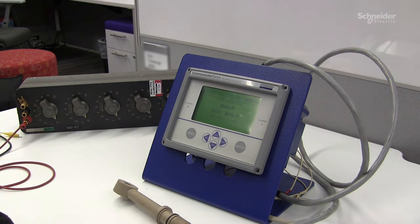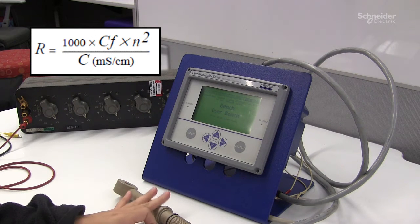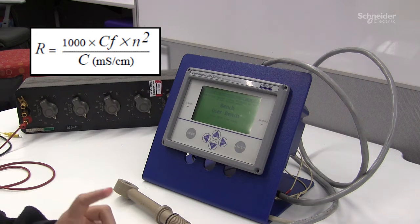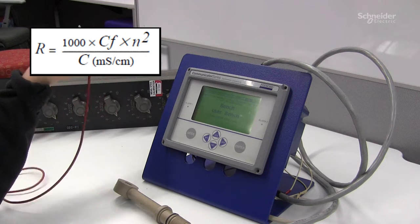It says that the resistivity that you require to use will be equals to a thousand times the cell factor of your specific sensor type, times the number of loops of the wire coming out of the decade box through the sensor board squared, and then divided by the conductivity required.